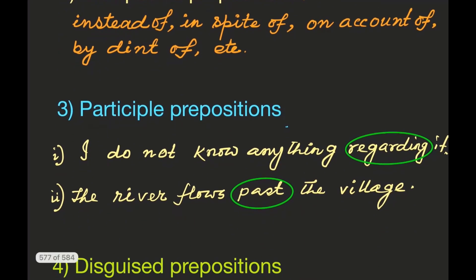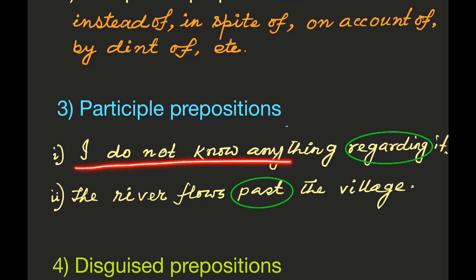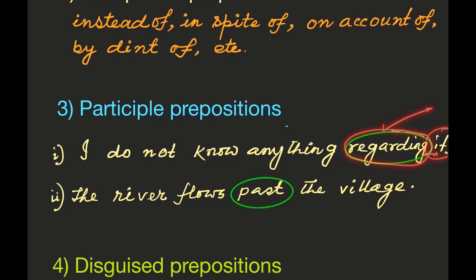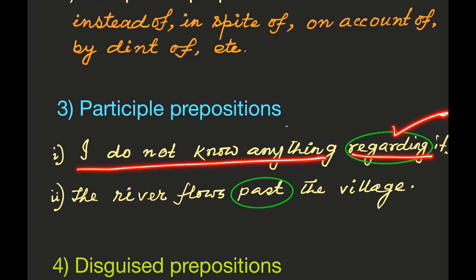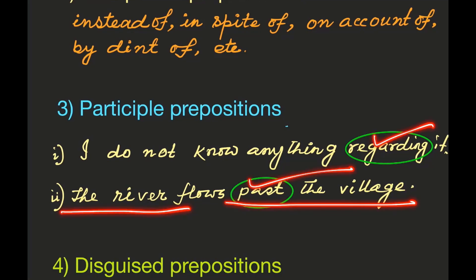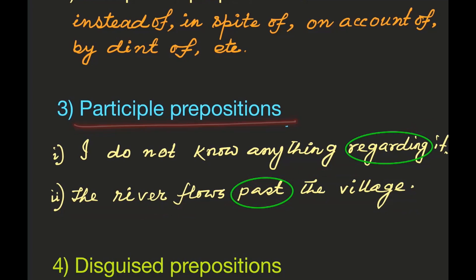Now, participle prepositions. Example one: 'I do not know anything regarding it.' 'Regarding' is a present participle meaning 'about,' and here it is used as a preposition to connect 'it' with the rest of the sentence. Example two: 'The river flows past the village.' 'Past' is a past participle used as a preposition. These are two examples of participle prepositions in English.